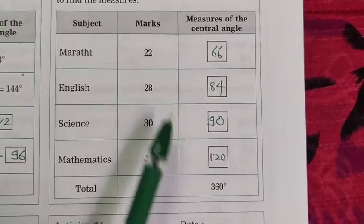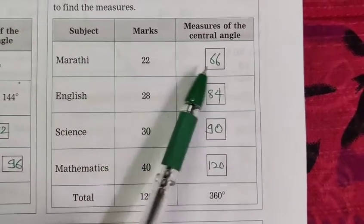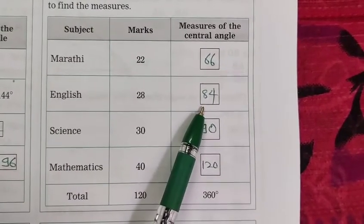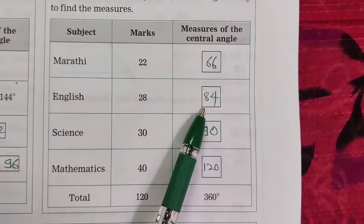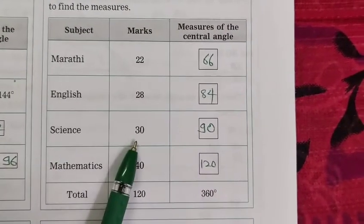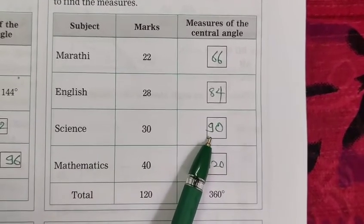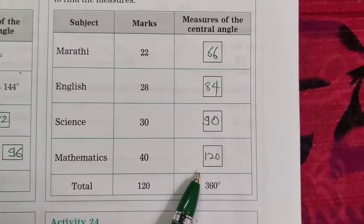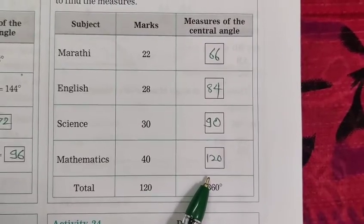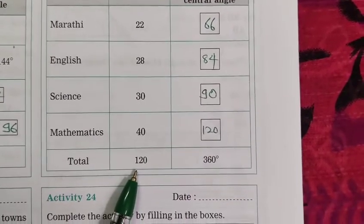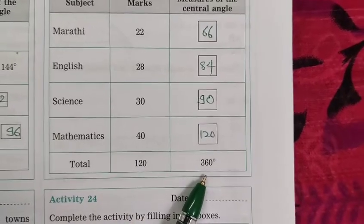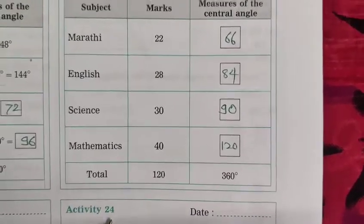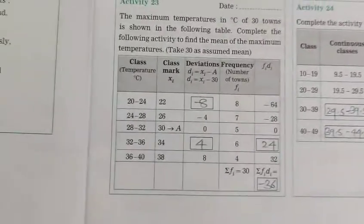By this given information we get here Marathi 22, therefore measures of the central angle is 66. Now English 28, 84. Science 30, 90, and Mathematics marks 40, and here measures of the central angle is 120. So total marks 120 and measures of the central angle is 360. This is Activity number 22.